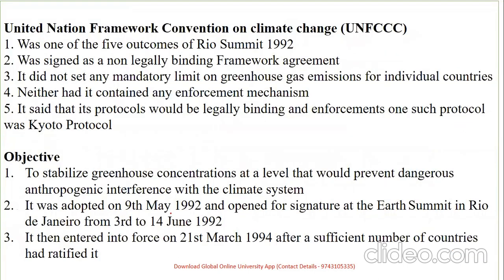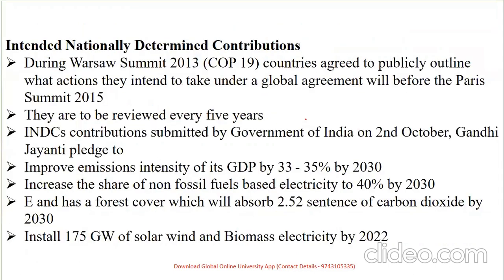The UN Framework Convention on Climate Change (UNFCCC) was one of the five outcomes of the Rio Summit. It is non-legally binding, meaning it is voluntary — it did not set any mandatory limits for greenhouse gas emissions and contained no enforcement mechanism. It stated that protocols would be legally binding, enforced with the help of the Kyoto Protocol. Its objective was to stabilize greenhouse gas concentrations and prevent dangerous activities. It was adopted in 1992, open for signature in June 1992, and came into force in 1994.